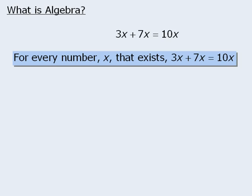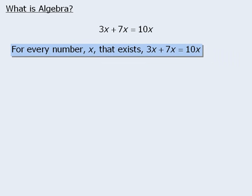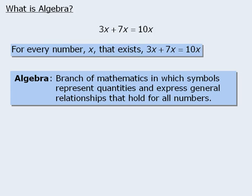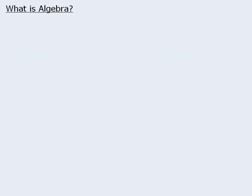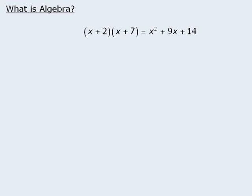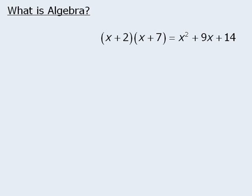This kind of generalization is what algebra is all about. Algebra is essentially a tool that uses letters to express general relationships that hold true for all numbers. So later in this module, when we say that x plus 2 times x plus 7 is equal to x squared plus 9x plus 14, we are saying that for every possible value of x, both expressions will have the same evaluation.